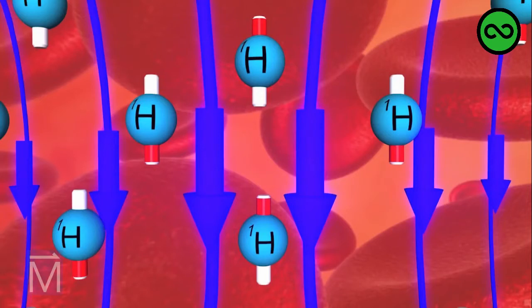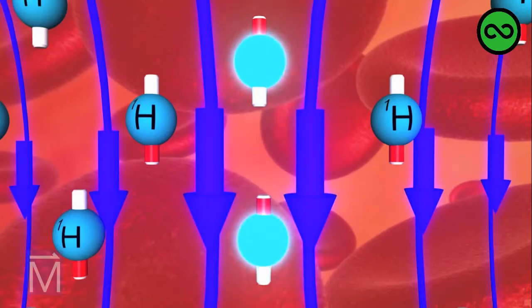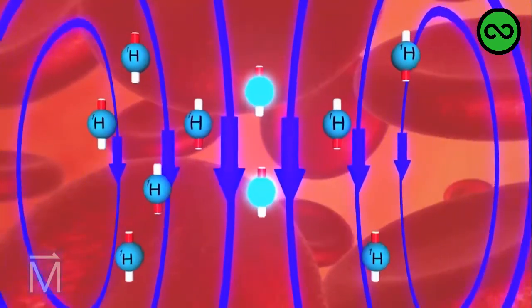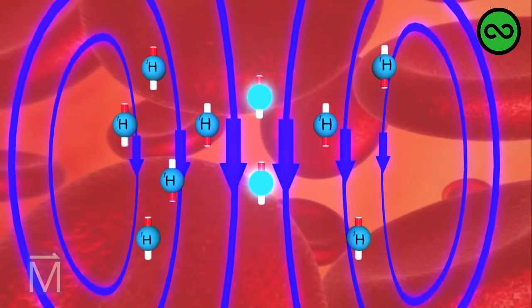Half the protons face in the direction of the field and the other half in the opposite direction. Well, not exactly half. There are a few more hydrogen protons arranged in opposition to the magnetic field than there are arranged in alignment with the field.